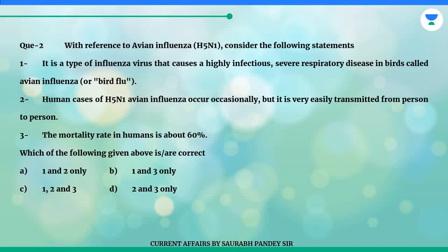Question 2. With reference to avian influenza H5N1, consider the following statements. 1. It is a type of influenza virus that causes a highly infectious, severe respiratory disease in birds called avian influenza or bird flu. 2. Human cases of H5N1 avian influenza occur occasionally but it is very easily transmitted from person to person. 3. The mortality rate in humans is about 60%.